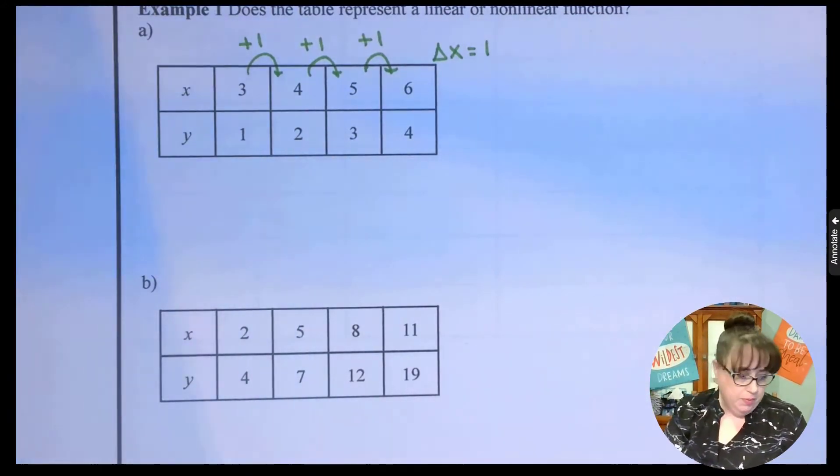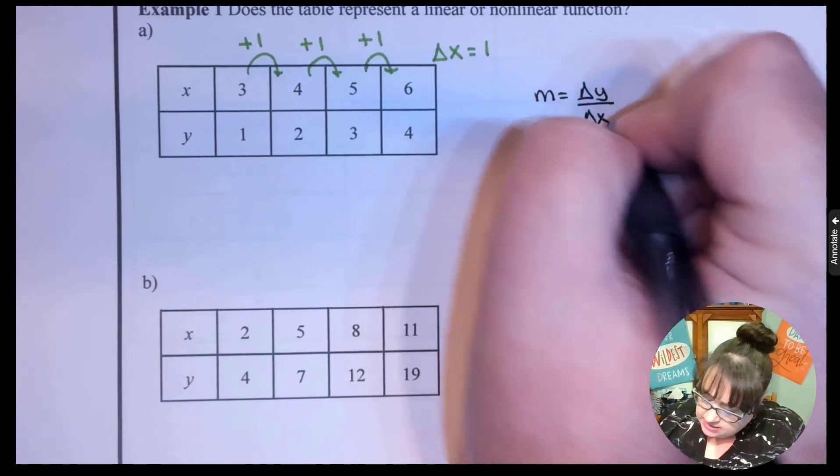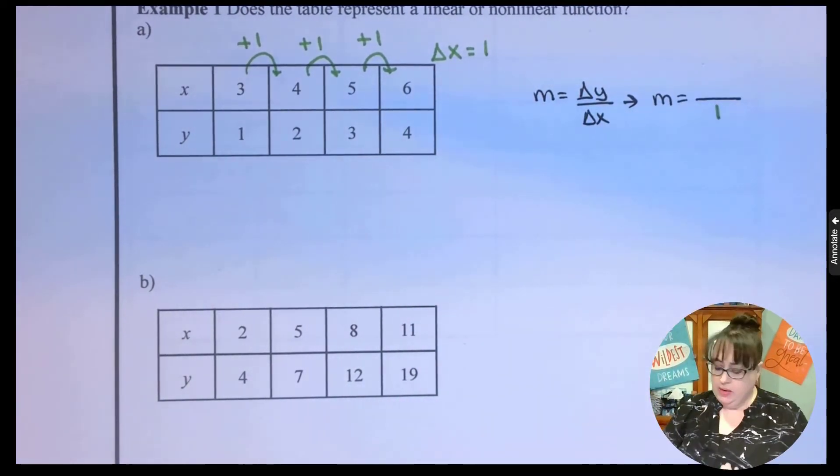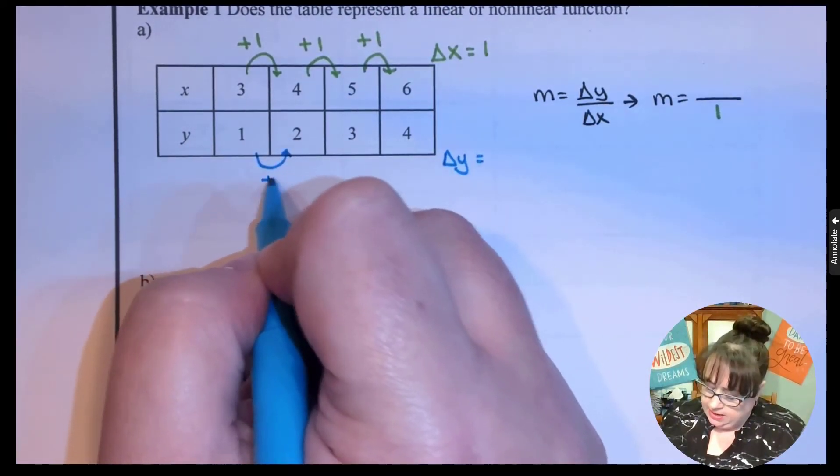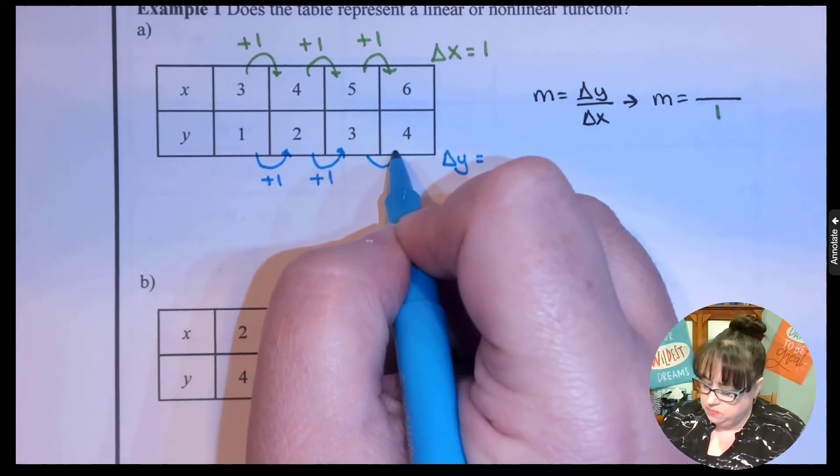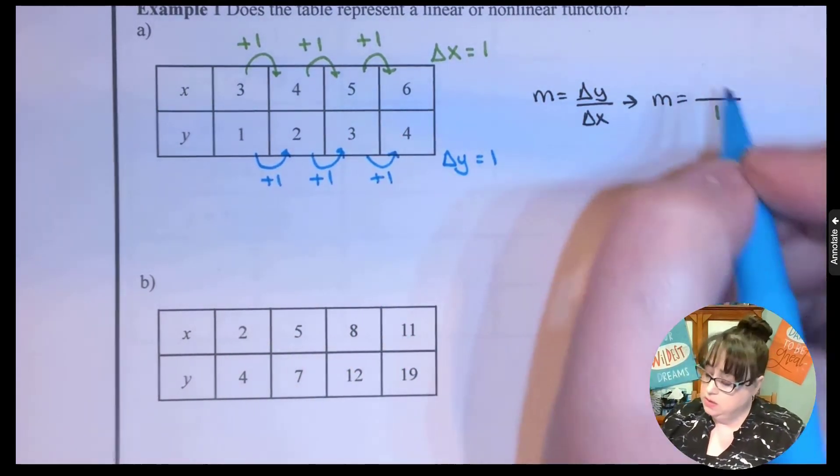So if we're thinking of slope, we know slope equals delta y over delta x. So far, I'm on my way to making a slope that is over 1. Now let's look at y. If this works, I'll have a nice delta y. From 1 to 2, I added 1, from 2 to 3, that was an increase of 1, and from 3 to 4 was also an increase of 1. So we have a nice delta y as 1 as well.